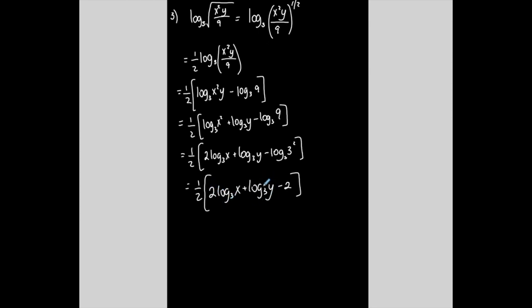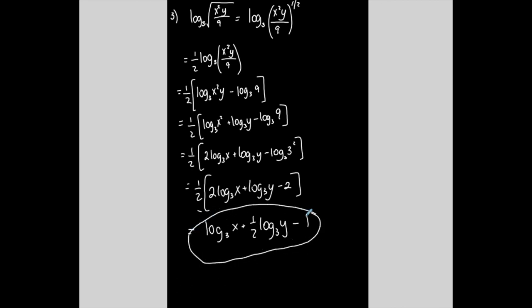Now there are no more quotients, products, or exponents. The only thing left is to distribute the one half: one half times 2 is 1, giving log base 3 of x; plus one half times 1, giving one half log base 3 of y; minus one half times 2, which is 1. And now it's fully expanded. Be careful not to miss things like simplifying log base 3 of 9 using the matching base property.